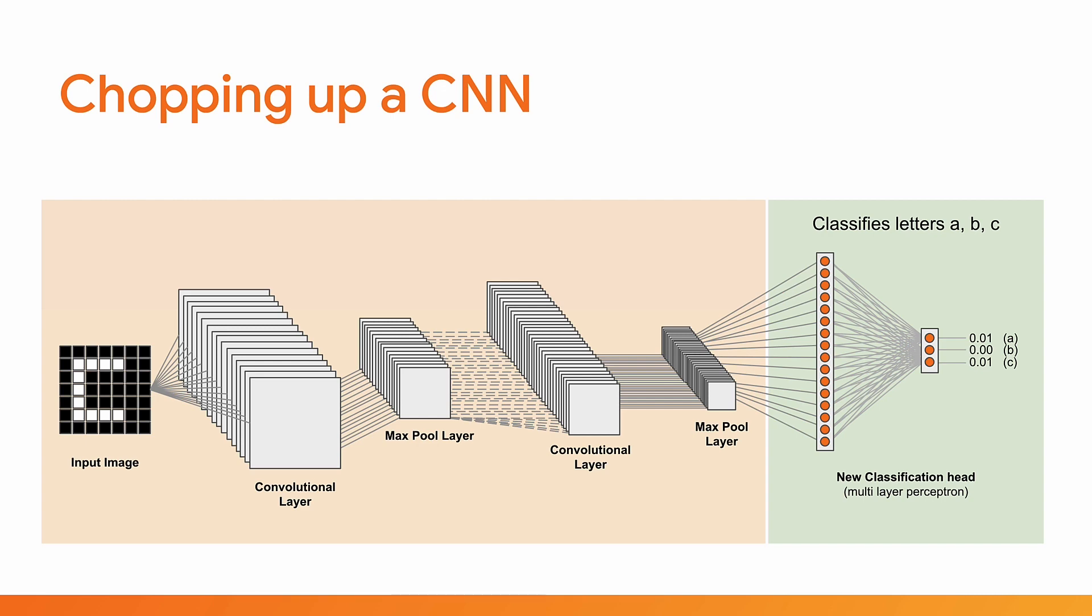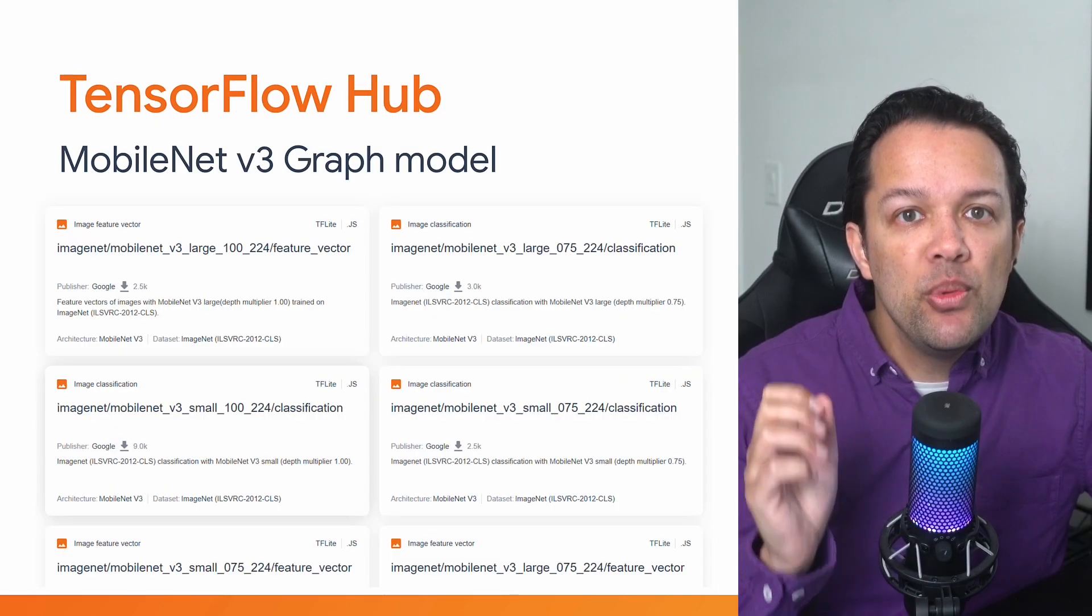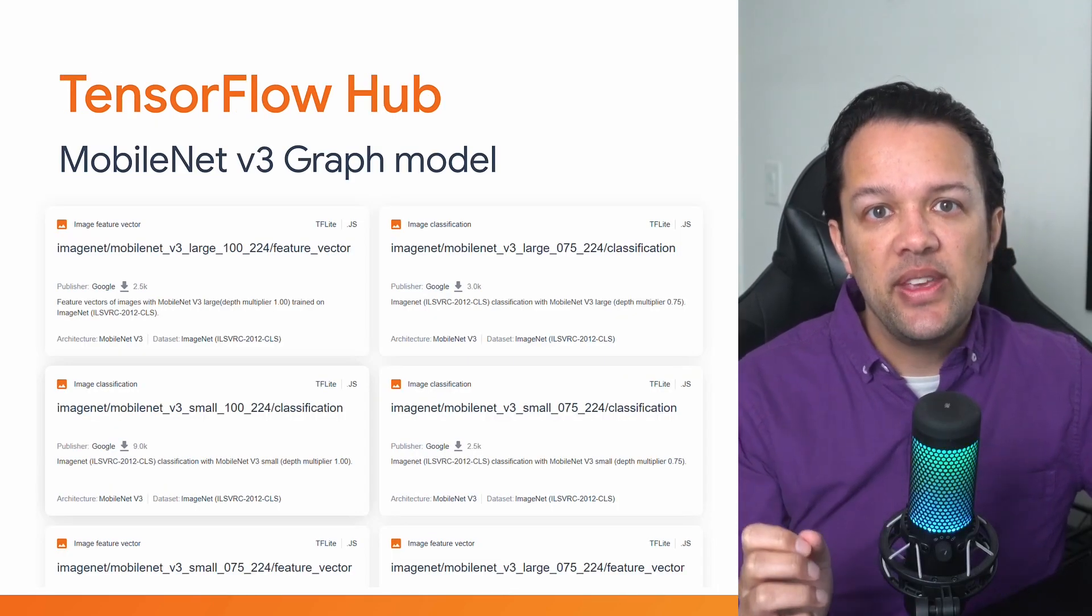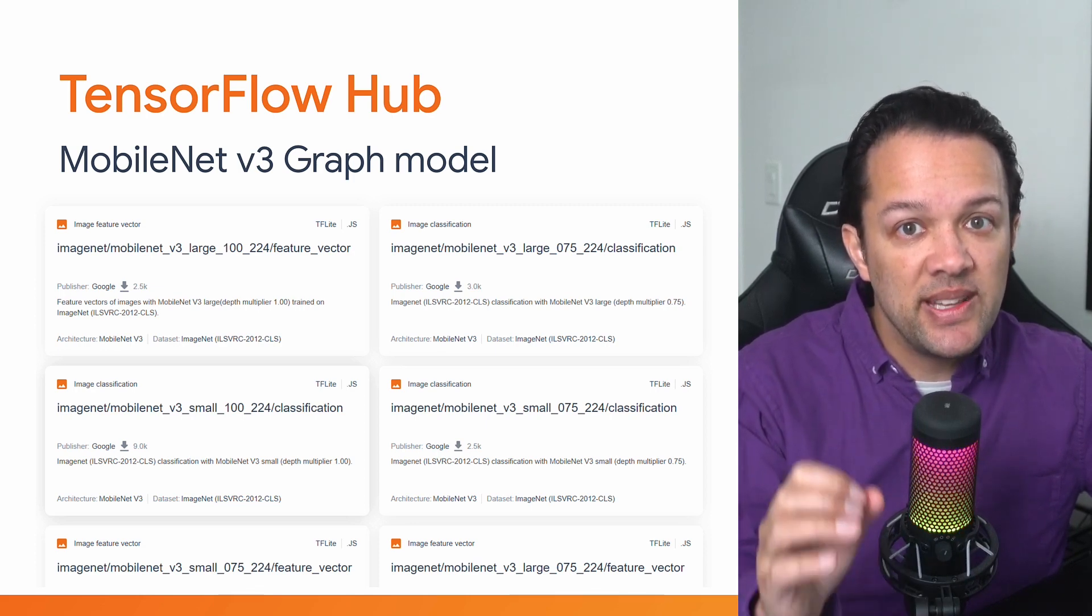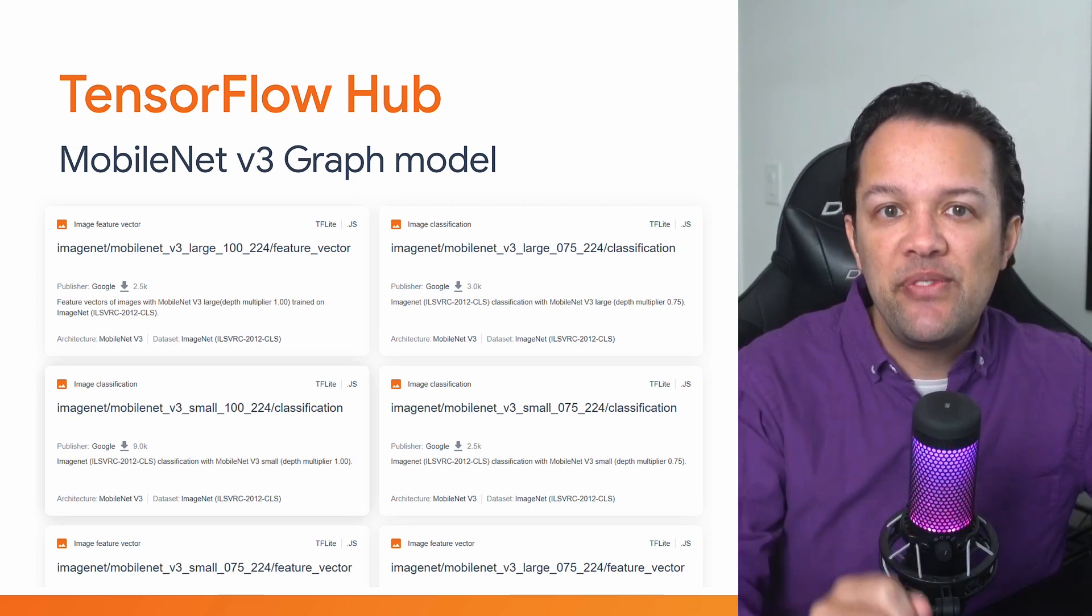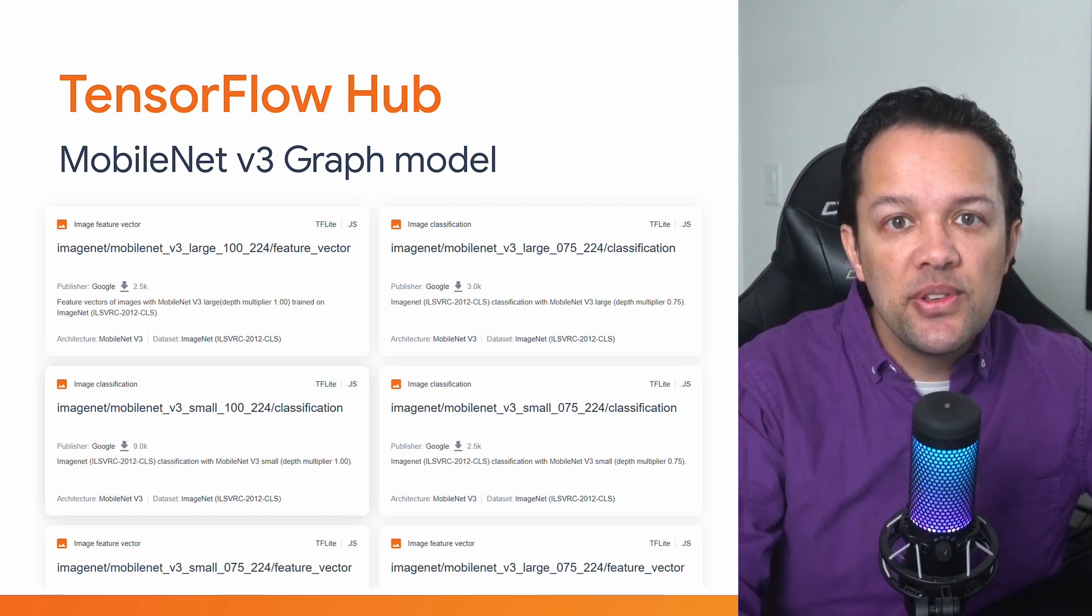So, how can you get your hands on the sub-parts of a model? Well, for more advanced research models like MobileNet, if you head on over to TensorFlow Hub and then filter the models suitable for TensorFlow.js that use the MobileNet V3 architecture, you'll find results like the ones shown.